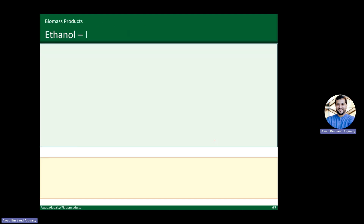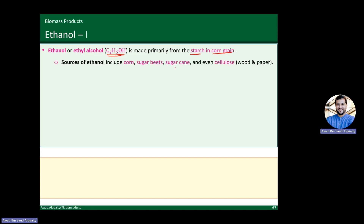Let's start with ethanol. Ethanol, or ethyl alcohol, whose chemical formula is C2H5OH, is one of the most common and most mature biofuels, having been used for a very long time. It's primarily made from the starch from corn grain, but this is not the only source. You can make ethanol from various other grains or biomass materials — corn, sugar beets, sugar cane, or even cellulose.